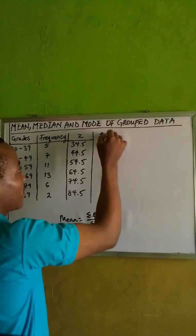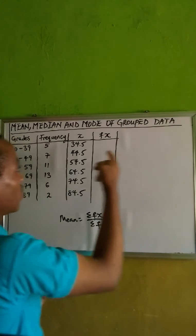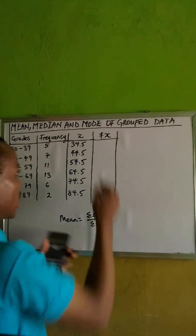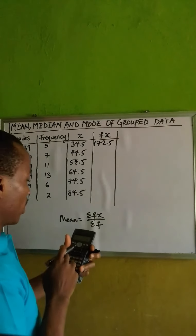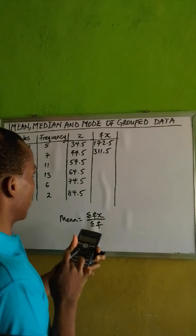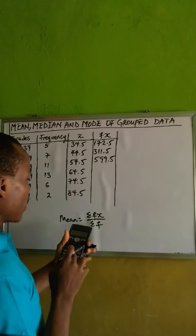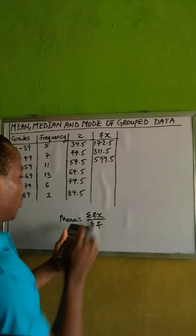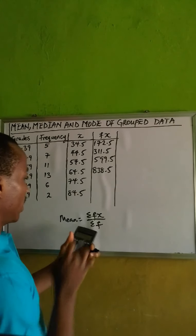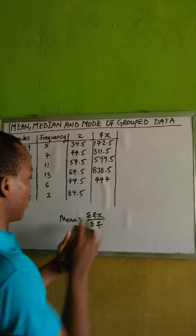Now let's work out fx, which means f times x. Multiply the frequency by x for each row: 34.5 times 5 gives us 172.5; 7 times 44.5 gives us 311.5; 11 times 54.5 gives us 599.5; 13 times 64.5 gives us 838.5; 6 times 74.5 gives us 447; and 2 times 84.5 gives us 169.